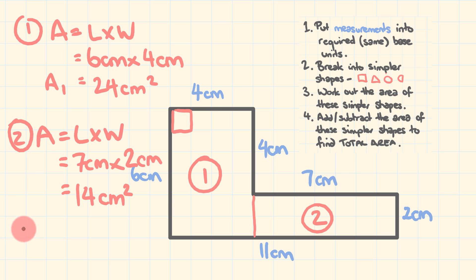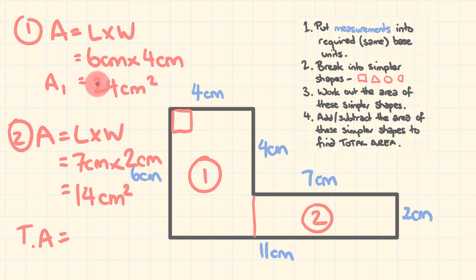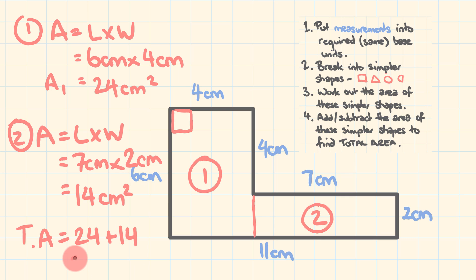So what is the total area? It's going to be equal to area one plus area two. Area one is 24 and area two is 14. So 24 plus 14, in centimeters squared, gives us 38 centimeters squared. Pretty simple. That's the first example — follow those steps and you'll be fine.